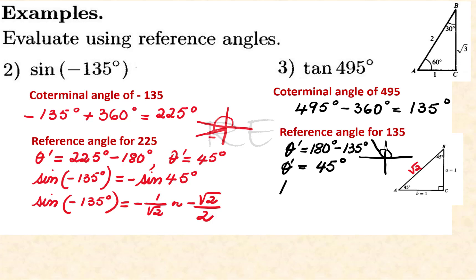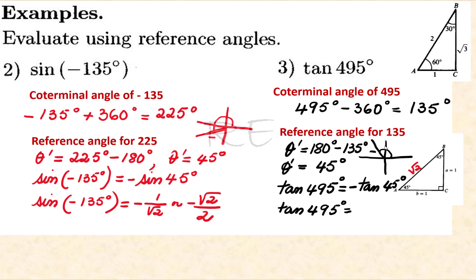Tangent of 495 is equal to negative tangent of 45, because tangent is negative in the second quadrant. Tangent of 495 degrees equals negative 1, since the tangent of 45 is 1.